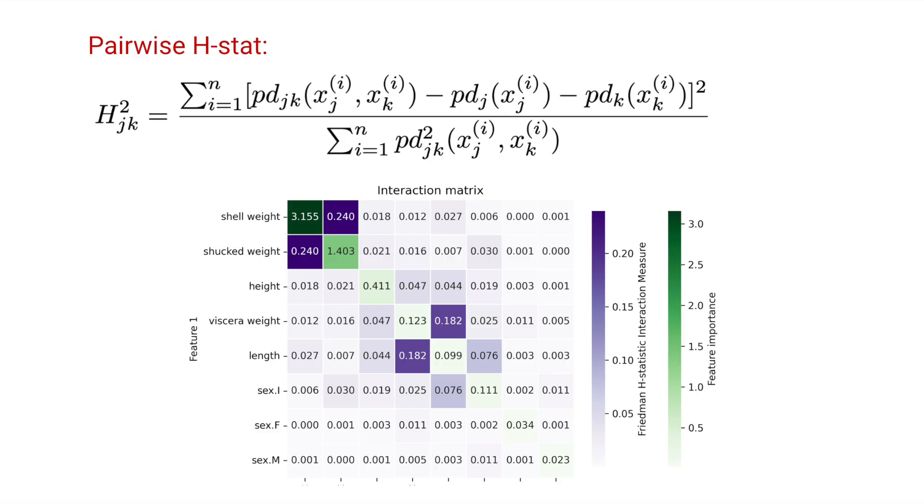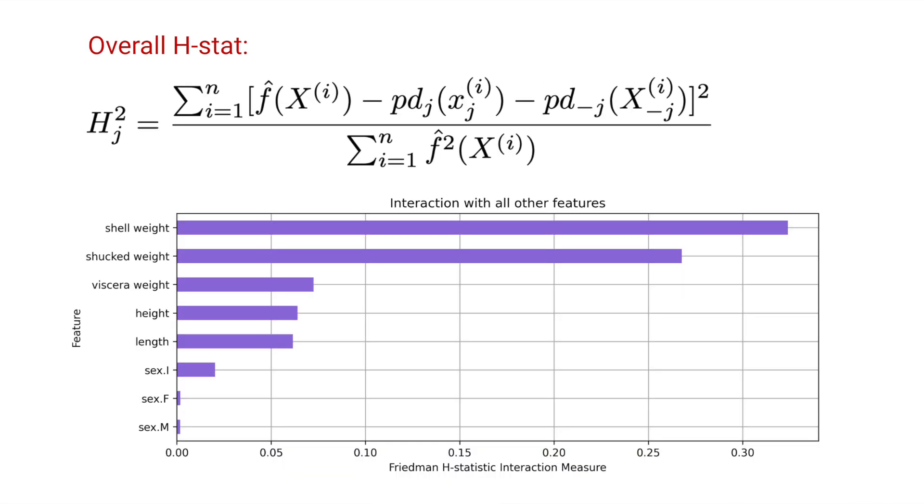Hi, I'm Conor and welcome to ADO. Today we'll explore one metric for analyzing interactions: Friedman's H-statistic, also known as the H-stat or H-index. I will explain the mathematics and intuition behind this metric and discuss its limitations. We will see that there are two versions of this statistic — one for the interaction between two features and one for the interaction between a feature and all other features.